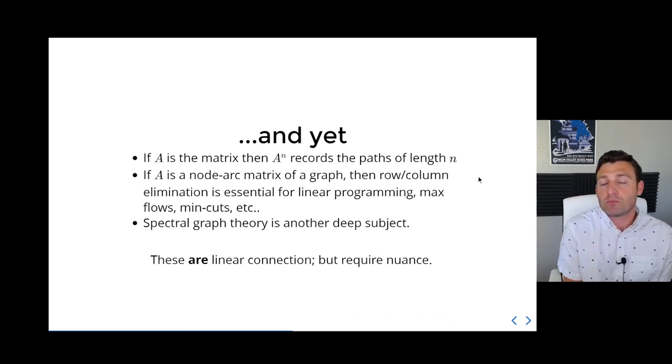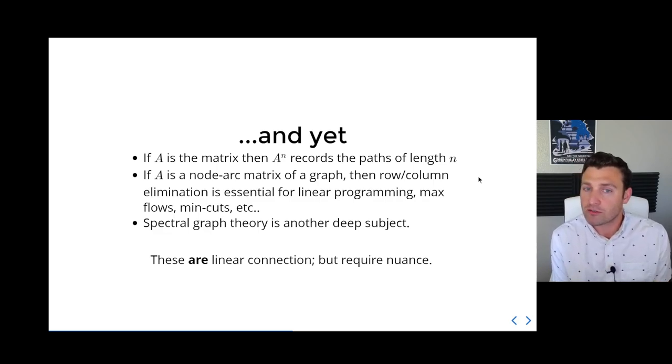We should refrain from calling them matrices until we know better. That said, many of you may have at this point taken enough material to know that there are some natural reasons to use linear algebra here. The most likely example is that if you take the adjacency matrix and square it, you end up with a matrix that describes all paths of length 2. You can do this for more general paths of length n. That's clearly an application of linear algebra.